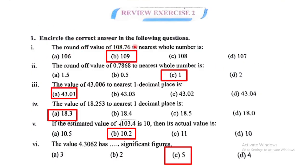Encircle the correct answer in the following questions. The round-off value of 108.76 to nearest whole number is? Correct option is B. The round-off value of 0.7868 to nearest whole number is 1.